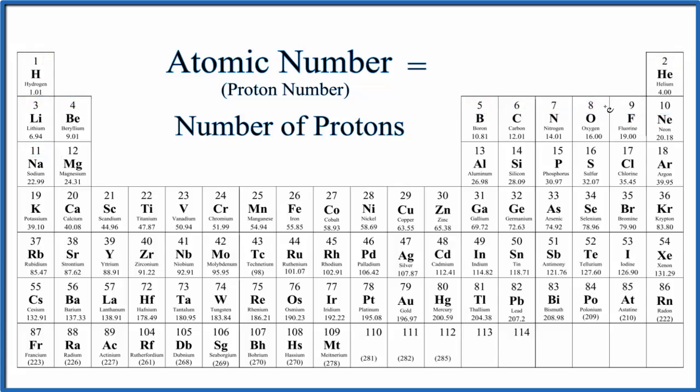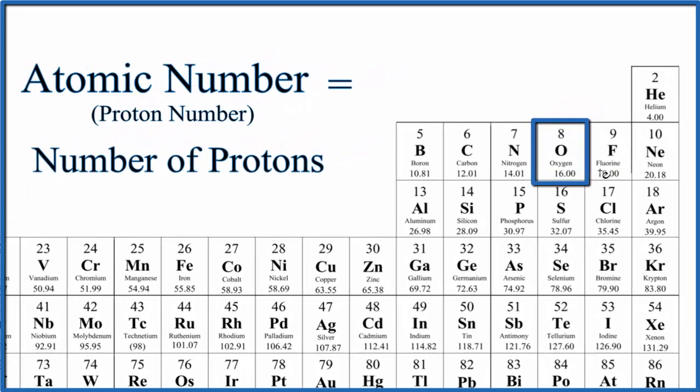So take a moment and think about this. What is the atomic number and the number of protons for oxygen? So we look at the number above the element symbol, above the O for oxygen, and we see 8. That's the atomic number, and it's the number of protons that we would find in the nucleus of an atom of oxygen.